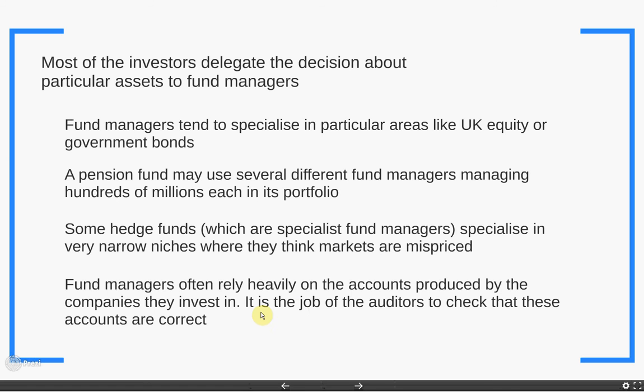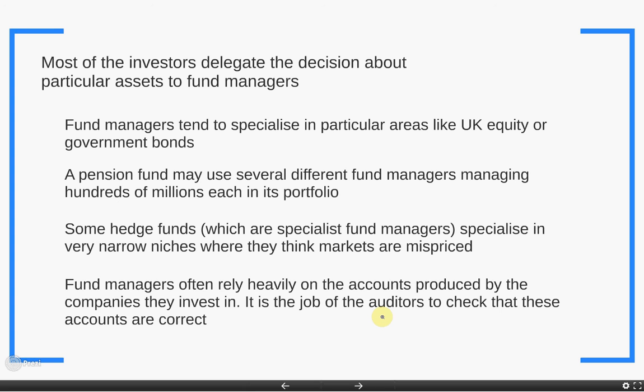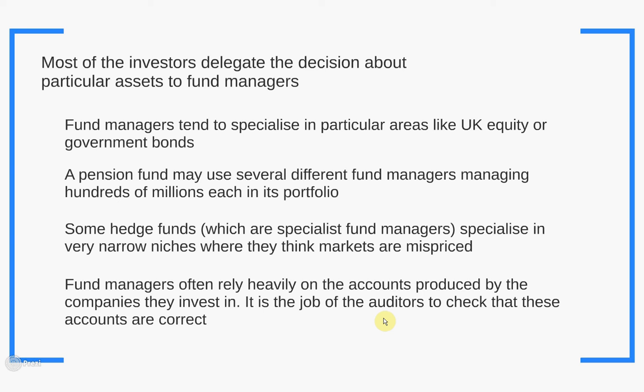When fund managers are actually investing in companies, they rely heavily on the reporting accounts produced by those companies. If a company says it's more profitable than it actually is, that might push the price up because fund managers think it's a more valuable company. So it's a very important responsibility to produce accurate reports and accounts, and it's the job of auditors to check that these accounts are correct — the same auditors like Ernst & Young, PwC, and Deloitte & Touche, checking the accounts of companies listed on the stock market to make sure they are doing what they say they're actually doing.